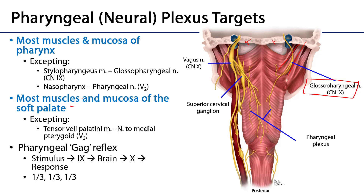Beyond its obvious motor role in swallowing and sensory role in triggering the deglutition reflex, the pharyngeal plexus also mediates the pharyngeal or gag reflex. This protective reflex clamps down the pharynx to prevent unexpected foreign bodies from traveling more distally. A stimulus touching the pharyngeal mucosa is transmitted to the CNS via the glossopharyngeal nerve, and the brain sends a motor response via the vagus nerve to clamp down — what we know as gagging.